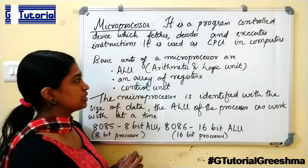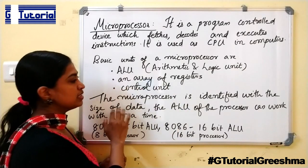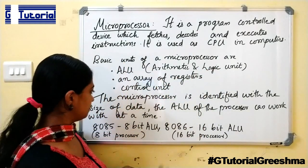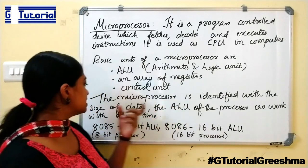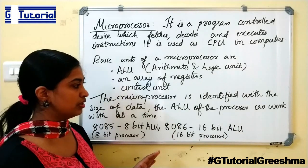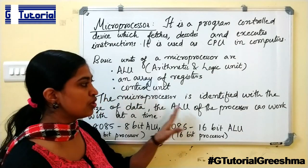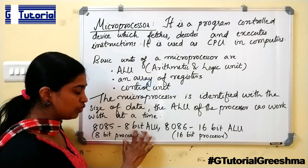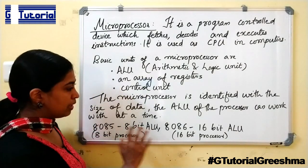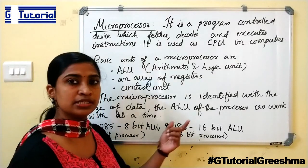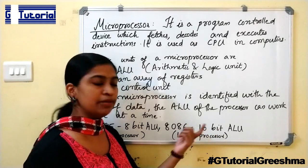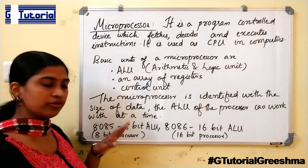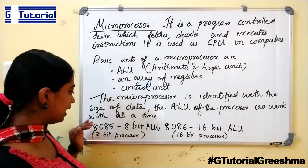The basic units of a microprocessor are ALU, an array of registers, and a control unit. ALU stands for arithmetic and logic unit. The microprocessor is identified by the size of data that the ALU can work with. If the ALU is able to process only 8-bit data, it is called an 8-bit processor. 8085 is such a processor — it has an 8-bit ALU. 8086 can process 16-bit data, so it is a 16-bit processor. We are asked to study only about 8085 in the RRB JE syllabus.